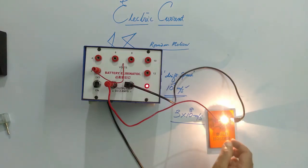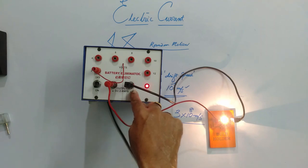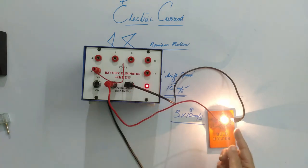That's why the bulb glows instantaneously. So for glowing the bulb, not that this electron from the negative terminal should go through the filament and then only the bulb glows. It is just because of the electric field.